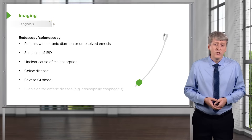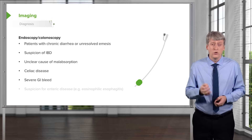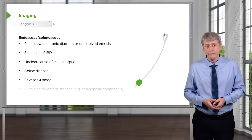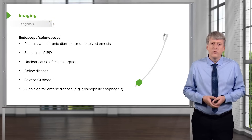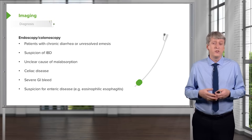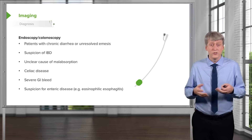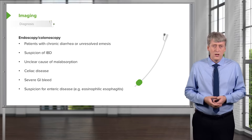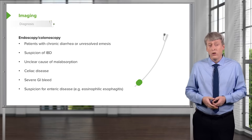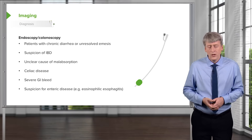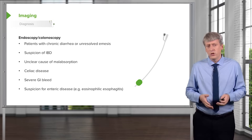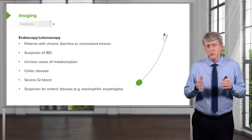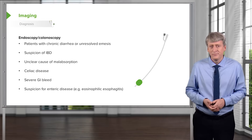Obviously, in any patient with a severe GI bleed, we want to go to endoscopy to try and stop the bleed. GI bleeds can happen very quickly and can be life-threatening. If we suspect eosinophilic esophagitis or eosinophilic gastritis, a biopsy is necessary to truly make that diagnosis, and visualization of the enteric wall may give us additional clues. That's a summary of everything related to children who are vomiting or have diarrhea — a good overview as we delve into more of these diseases in further lectures.